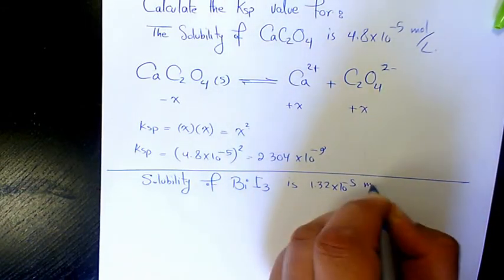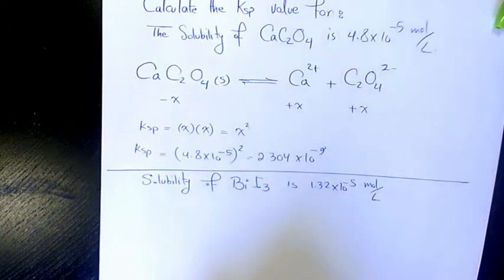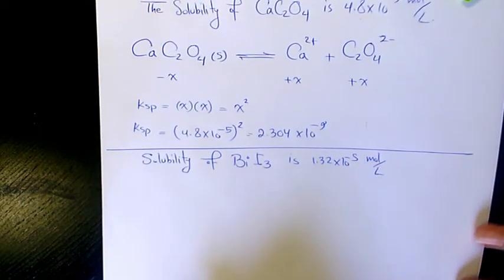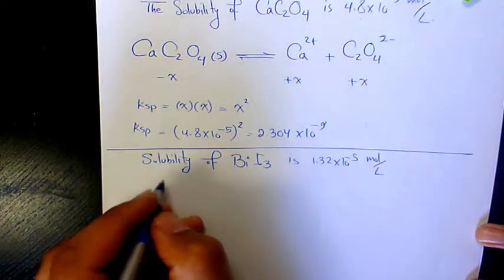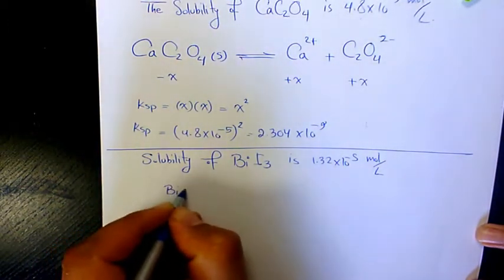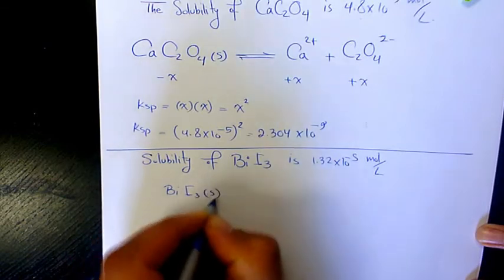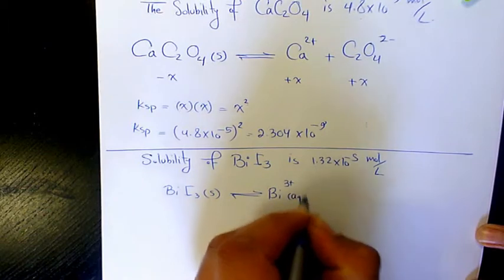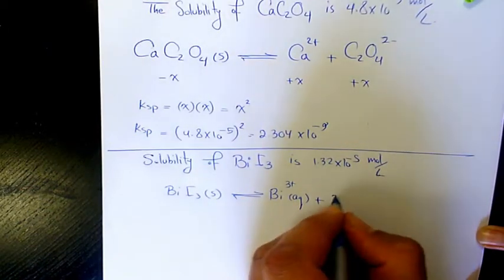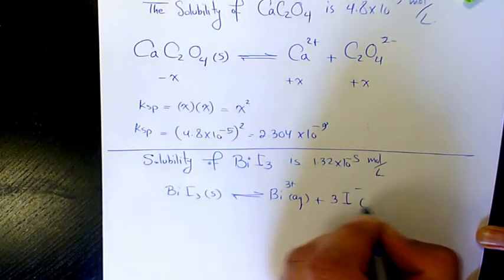So we're gonna use the same procedure. BiI3 in solid form dissolves and makes Bi³⁺ in aqueous phase plus 3 iodide, again in aqueous phase. So initially this one is zero, this one is zero.